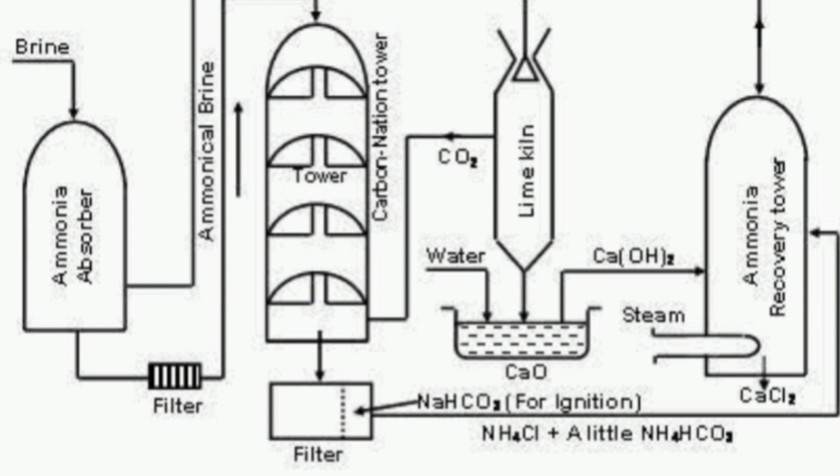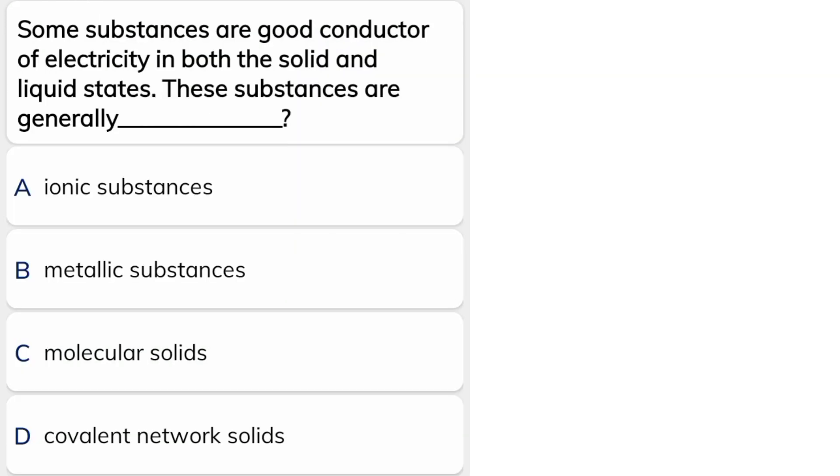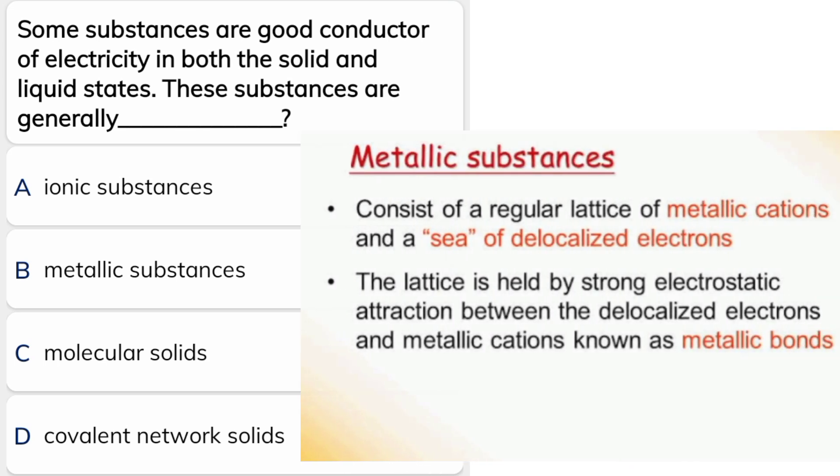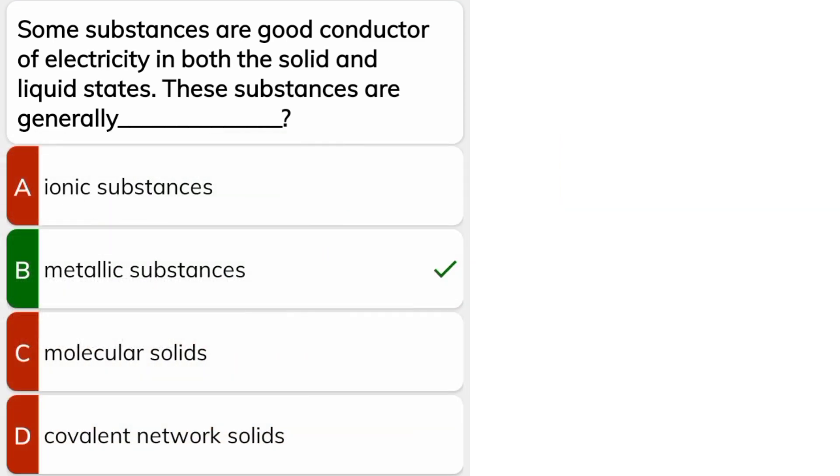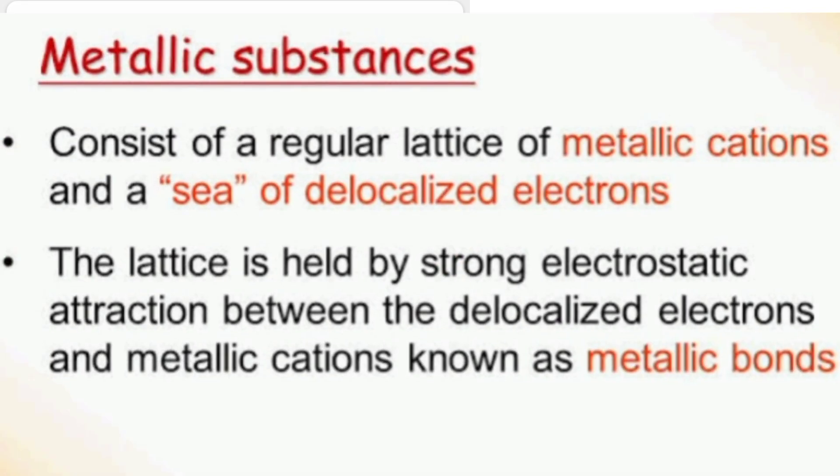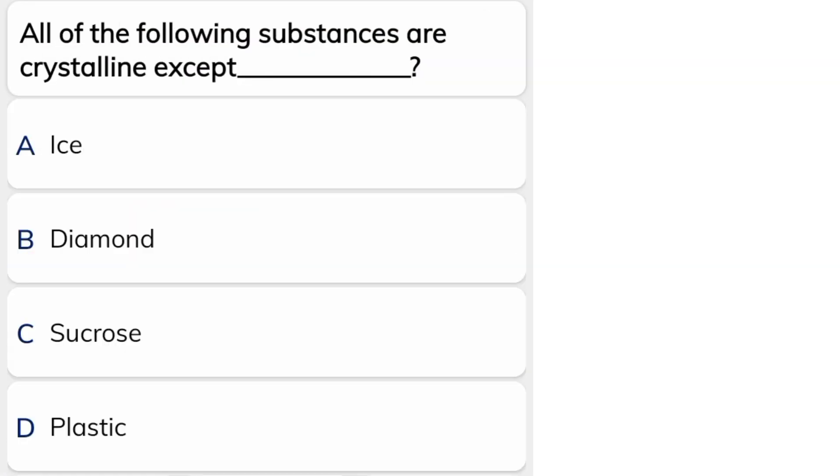The structure of this process you can see on your screen right now. Some substances are good conductors of electricity in both the solid and liquid state. These substances are generally metallic substances.